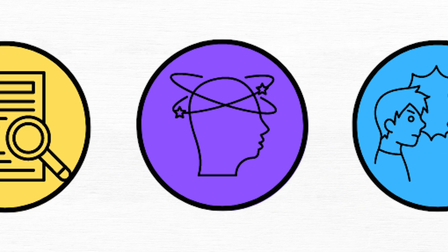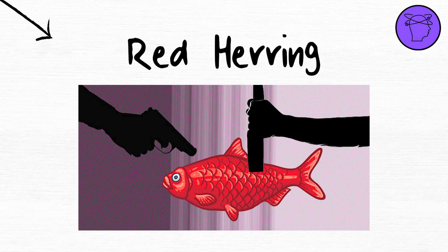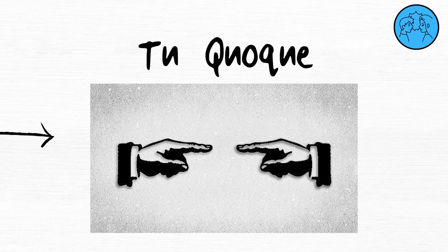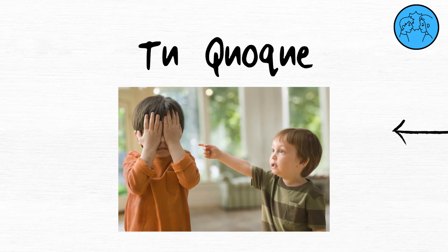Red herring. A red herring is a distraction from the main issue. Tu quoque involves discrediting an argument by pointing out the opponent's inconsistency in behavior.